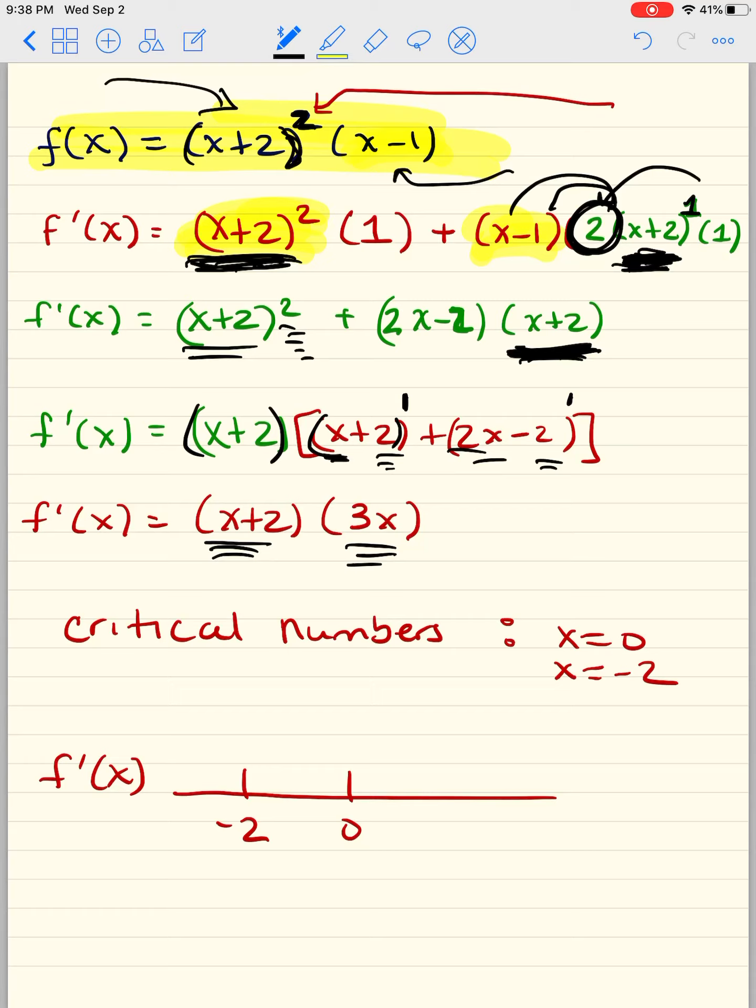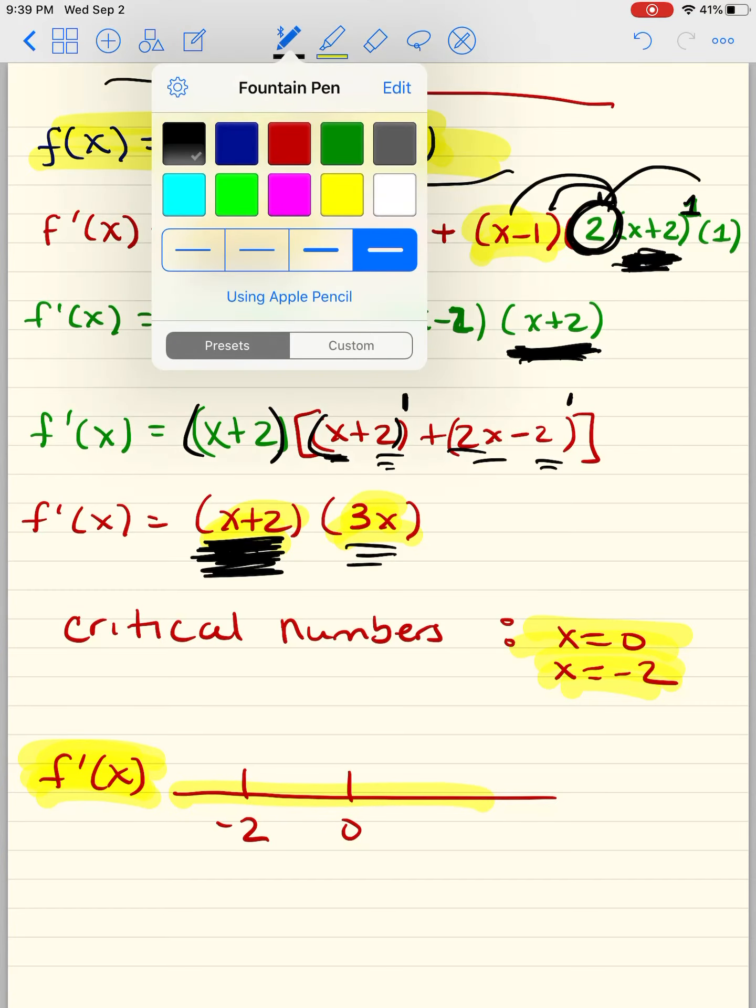Alright, we took the first derivative and now we're going to set it equal to 0 to find our critical numbers. Well, we can see easily that negative 2 makes this part 0, and 0 makes this part 0, so my two critical numbers are these two guys. Once we do that and we find those critical numbers, we make a number line, and that's f prime of x. We're going to put those two critical numbers here.